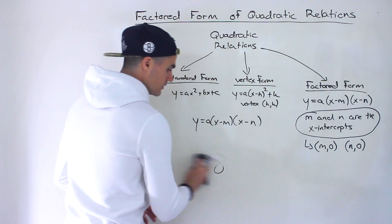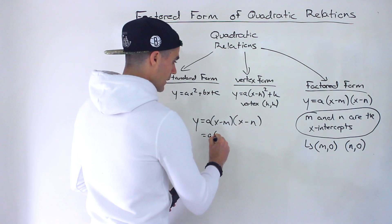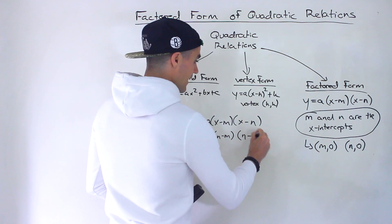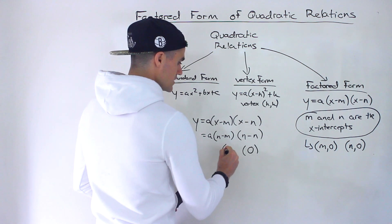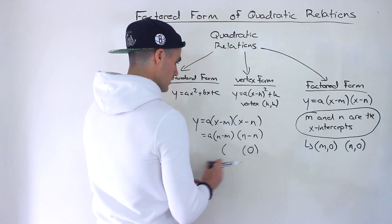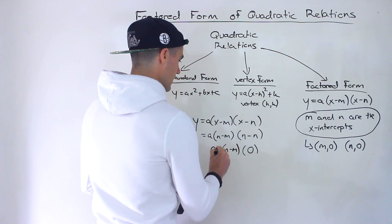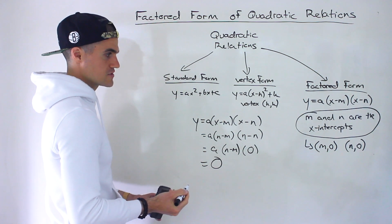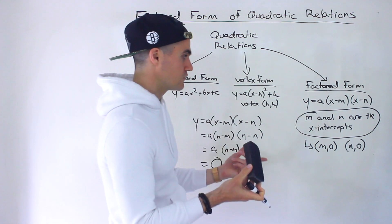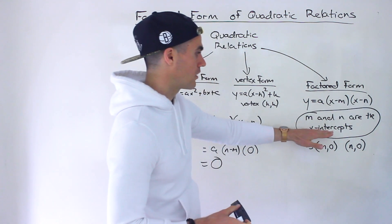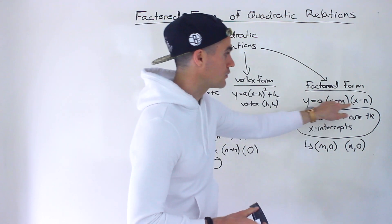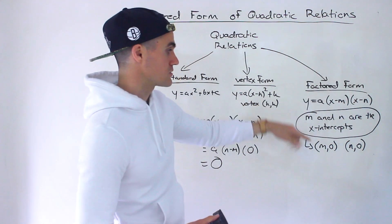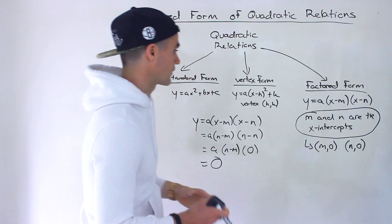Same thing if we plug in n: we'll have n minus m in the first bracket, and then n minus n in the second bracket, which gives us zero. So that whole expression becomes a times (n minus m) times zero, giving a y value of zero. That's why it intuitively makes sense that m and n are x-intercepts — plugging either of them in makes the whole expression zero.